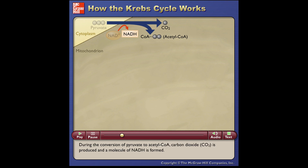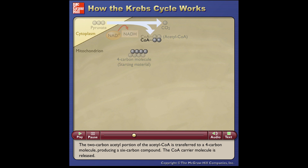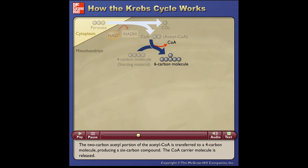During the conversion of pyruvate to acetyl CoA, carbon dioxide (CO2) is produced and a molecule of NADH is formed. The two-carbon acetyl portion of the acetyl CoA is transferred to a four-carbon molecule, producing a six-carbon compound. The CoA carrier molecule is released.